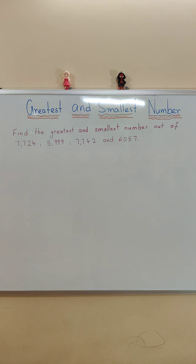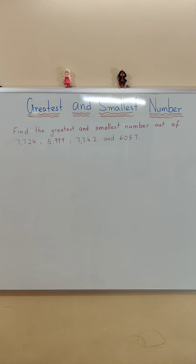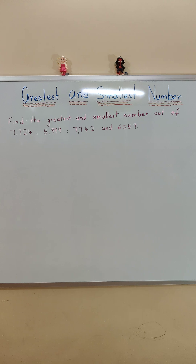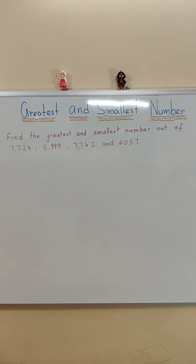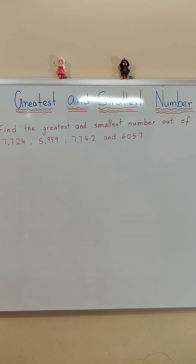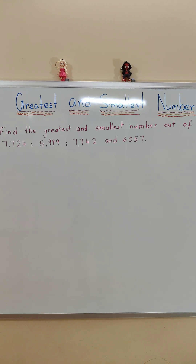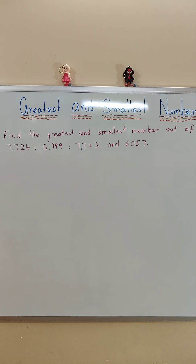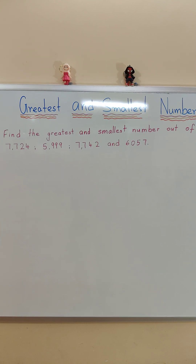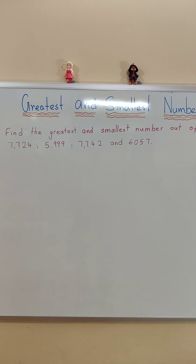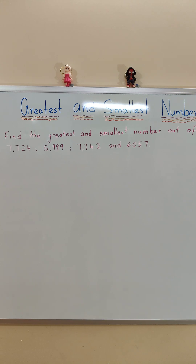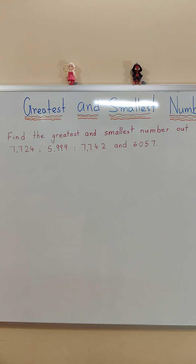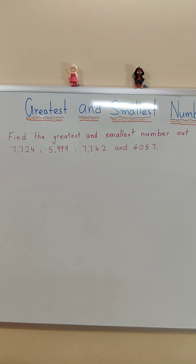Today we will learn how to find the greatest and the smallest number. First, read the question: find the greatest and the smallest number out of the numbers 7724, 5999, 742, and 6057.